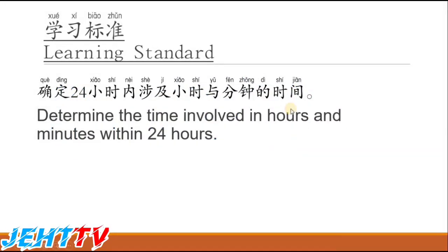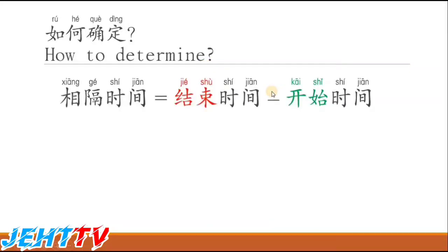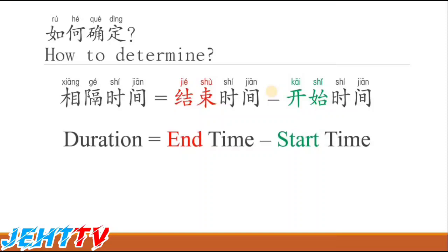The learning standard of today is to determine the time involved in hours and minutes within 24 hours. How do we determine the hours and minutes within 24 hours? How do we find the duration? The formula to find the duration is: duration equals end time minus start time.